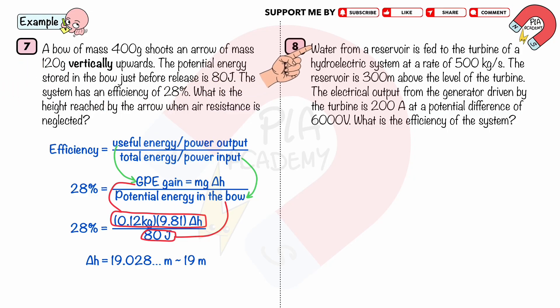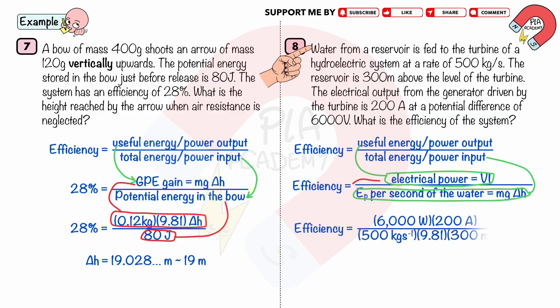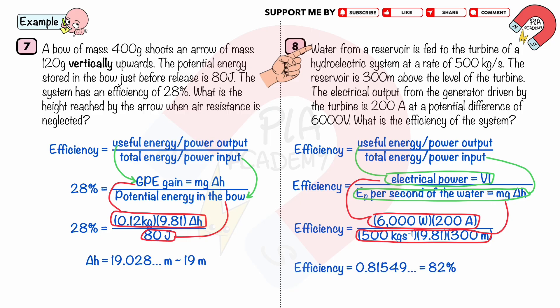Work example 8. Water from a reservoir is fed to the turbine of a hydroelectric system at a rate of 500 kilograms per second. The reservoir is 300 meters above the level of the turbine. The electrical output from the generator driven by the turbine is 200 amperes at a potential difference of 6,000 volts. What is the efficiency of the system? Efficiency equals useful power output divided by total power input. The useful power output equals electrical power equals VI equals 6,000 volts times 200 amperes. The total power input equals the gravitational potential energy per second of the water equals 500 kg/s times 9.81 times 300 meters. Therefore, the efficiency equals 82% to two significant figures.